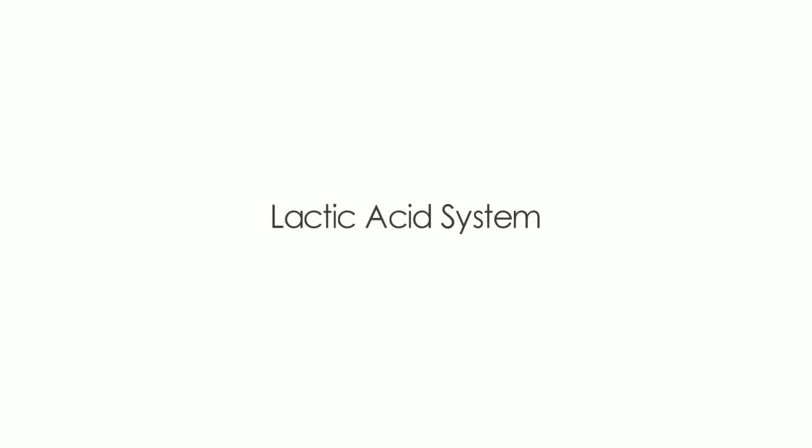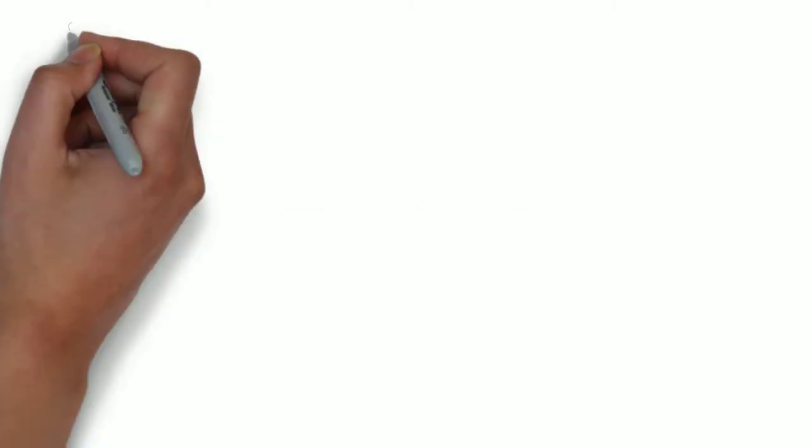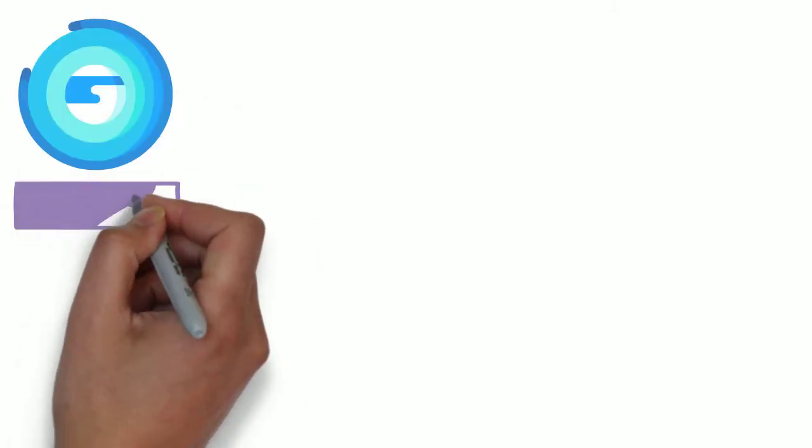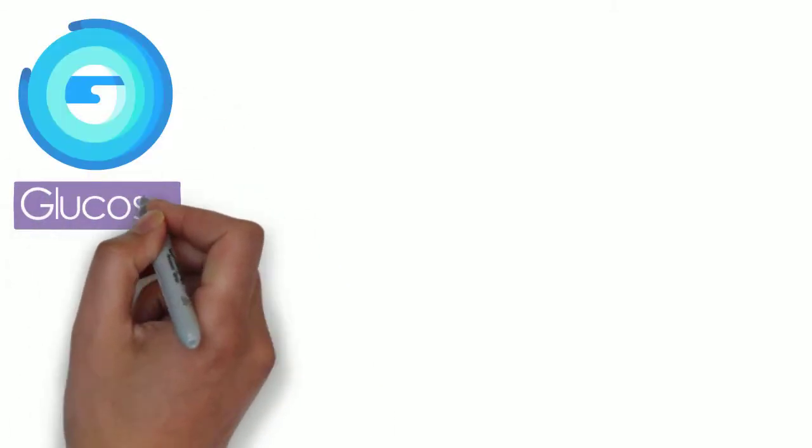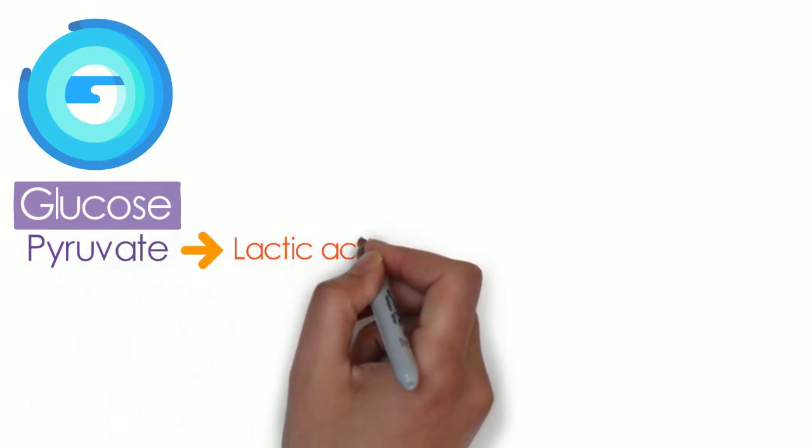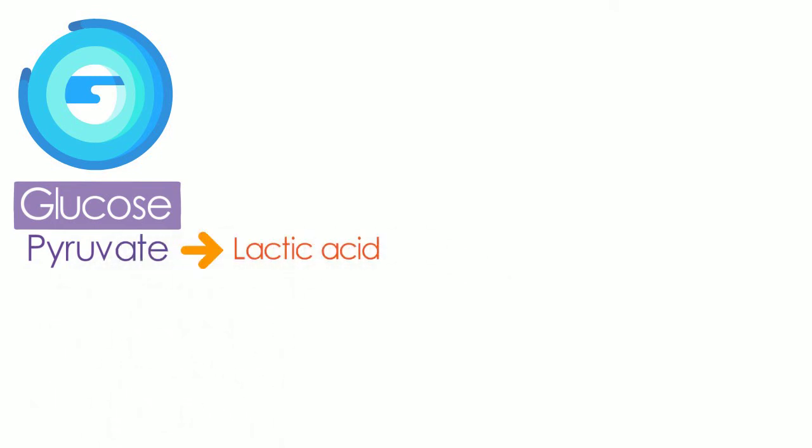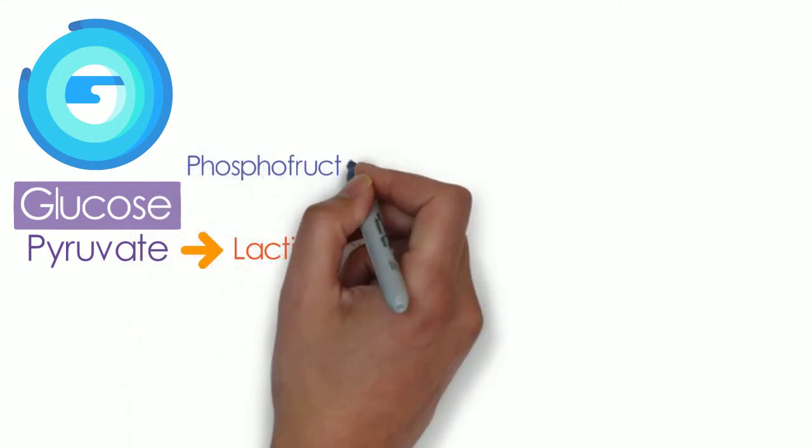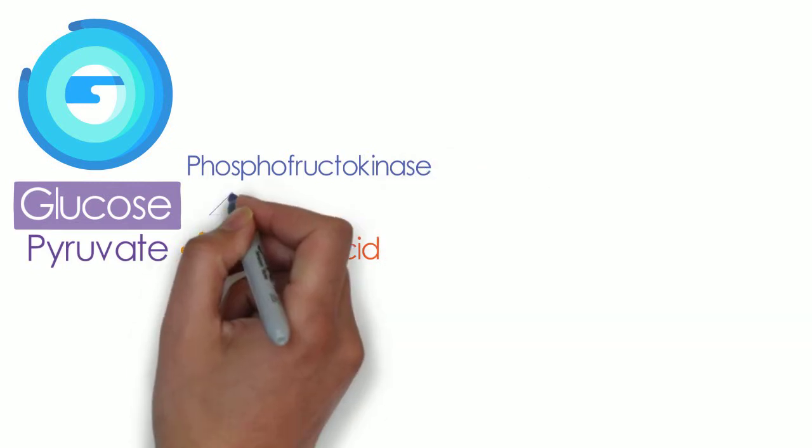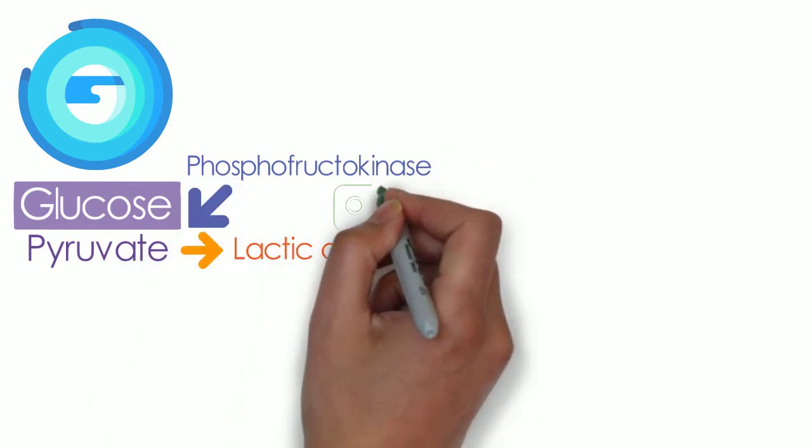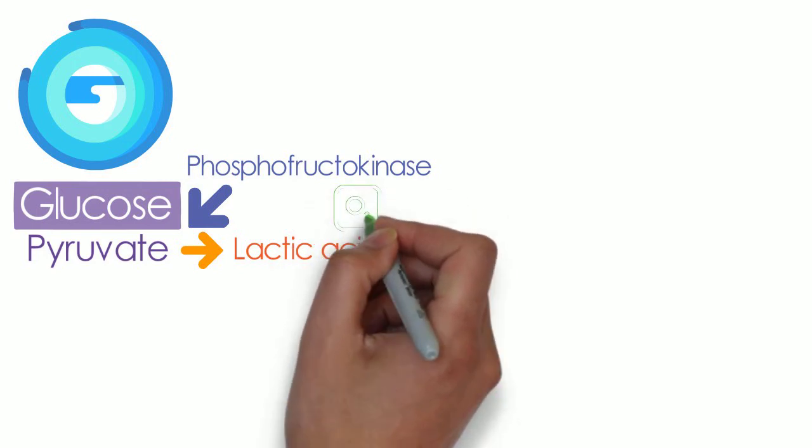Lactic acid system. Once the ATP-PC system is depleted, glycogen is broken down in the liver and muscles to give glucose, which is then broken into pyruvate and later lactic acid in the absence of oxygen or anaerobic respiration. Phosphofructokinase is the enzyme responsible for breaking glucose into pyruvate, while lactate dehydrogenase further breaks it into lactic acid in the absence of oxygen.